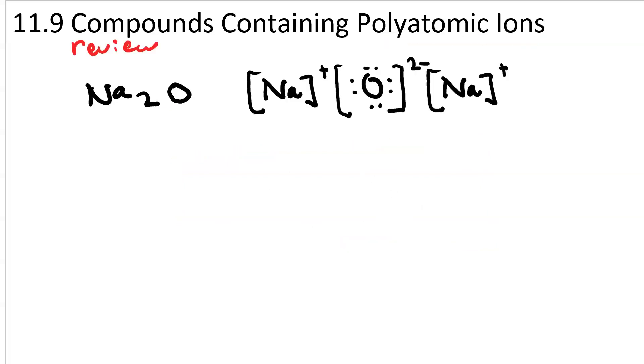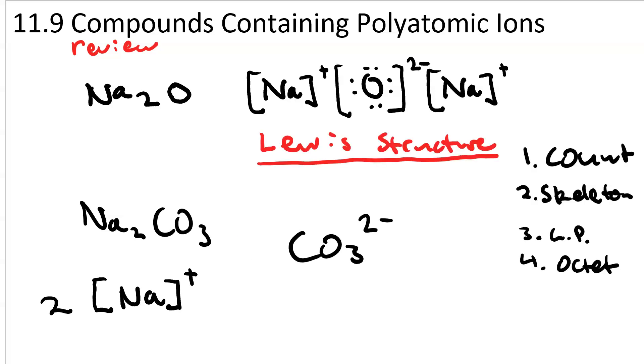Now let's look at an ionic compound that contains a polyatomic ion like Na2CO3. Just as in the sodium oxide, the sodium carbonate contains two Na plus ions, which is brackets around an Na with zero dots because it gave up its one valence electron and a plus one charge. We also have to show the Lewis structure for carbonate. The formula and charge of a carbonate ion is CO32 minus. So we're going to make the Lewis structure for carbonate by going through our four steps.